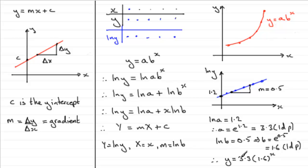Don't make the mistake of multiplying 3.3 by 1.6 — just leave it in that form. I hope that's given you some idea. These are some of the common ones you're likely to face, but hopefully you can apply this rule in many other cases.